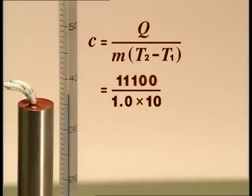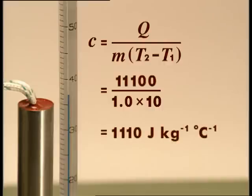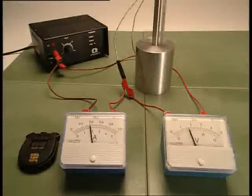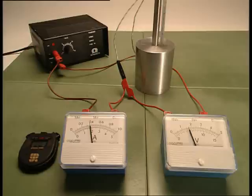Finally, substitute this value into the heat equation. Our calculated specific heat capacity is 1,110 joules per kilogram per degree Celsius. The actual value for the specific heat capacity of aluminium is 908, so our experimental value was quite close. Can you suggest causes of error and improvements to our experiment?